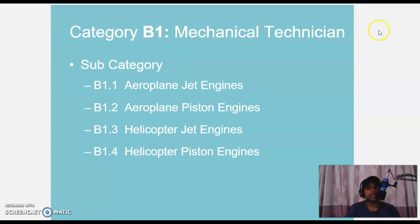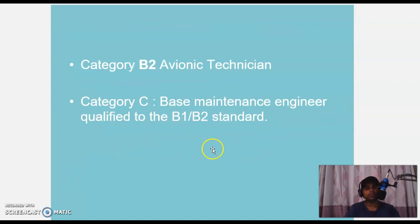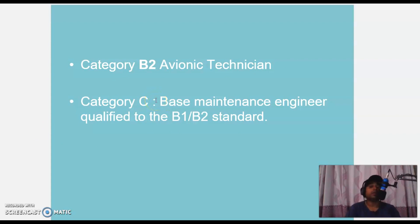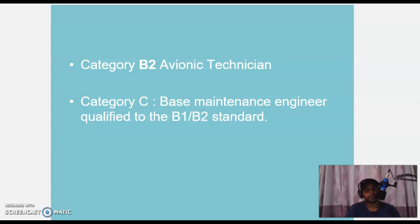Category B1 mechanical technicians also have subcategories: B1.1 aeroplane jet engines, B1.2 aeroplane piston engines, B1.3 helicopter jet engines, and B1.4 helicopter piston engines. Category B2 is avionics technician. Category C belongs to base maintenance engineer qualified to the B1 and B2 standard — normally Category C engineers are the persons who are going to sign for the CRS.